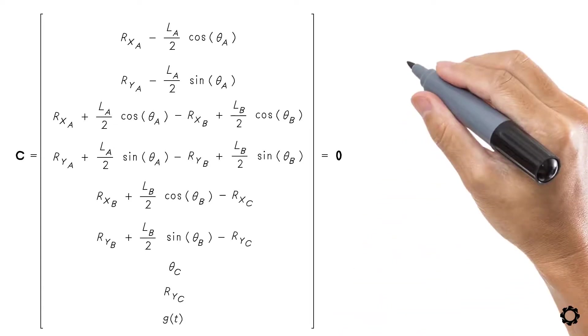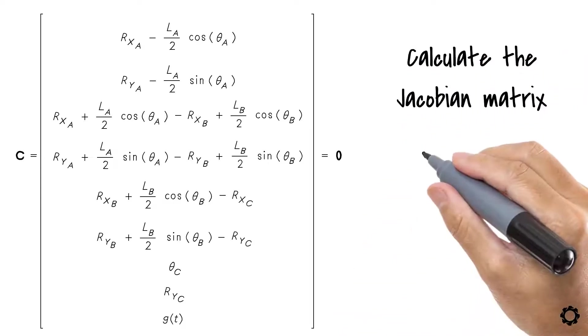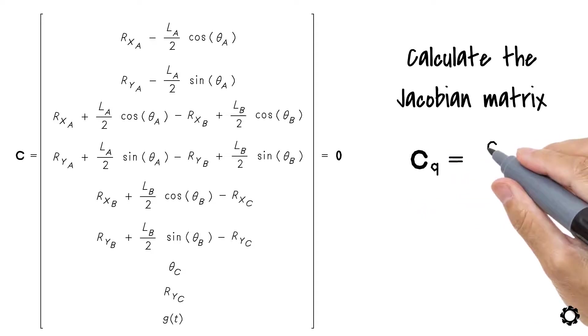We know that we have to calculate the Jacobian matrix as the next step, which involves differentiating the vector of constraints with respect to the generalized coordinate vector. So we better be prepared for that.